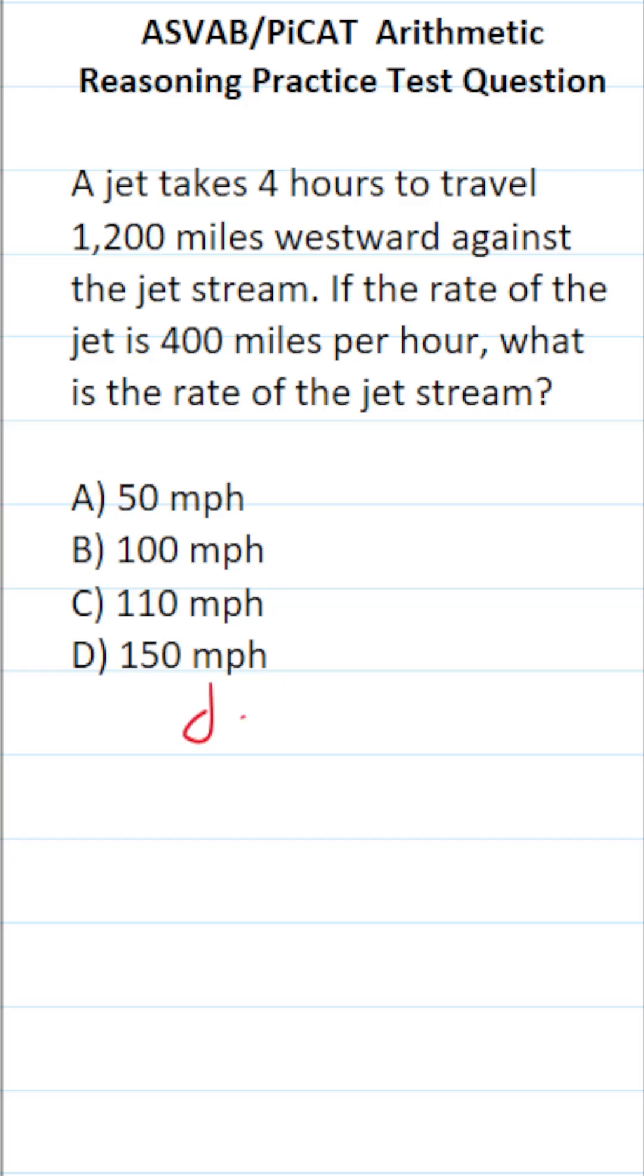The distance formula says distance equals rate times time. Going through this question, we have a time of four hours, a distance of 1,200 miles, and a rate of 400 miles per hour.